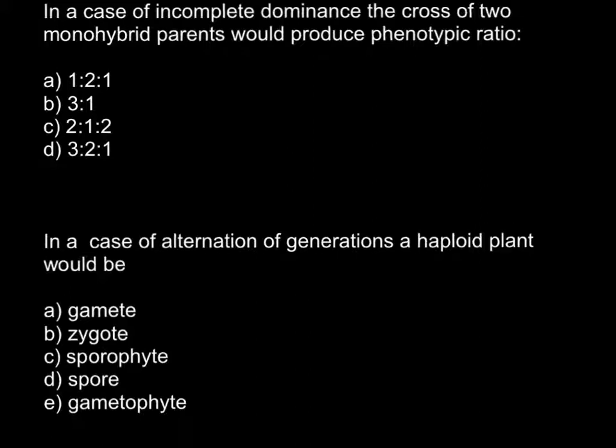For example, parent 1 would be capital A and small a, and parent 2 also would be monohybrid, so would have one allele that is capital A, another one is small a.